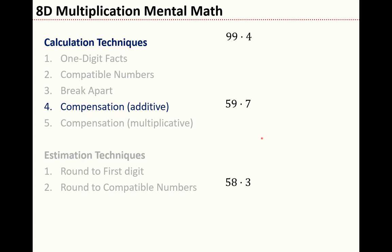Compensation. Now there are two kinds of compensation, additive and multiplicative. We'll start with the additive compensation. Let's say that one of the numbers we want to multiply is just under something nice. 99 is just under 100 which is nice, so I will add 1 to 99 to get 100. And now when I do my multiplication, 100 times 4 equals 400.